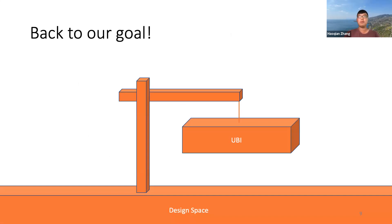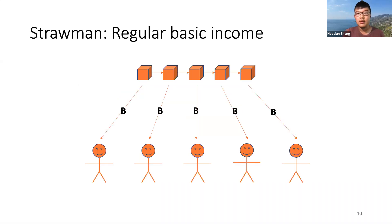Back to our main goal: we want to build a solid UBI without central control of government in controlling and redistributing money, and without relying on the existing banking system. Let us first try a strawman — we simply regularly distribute a crypto basic income to everyone, created by a blockchain from thin air.